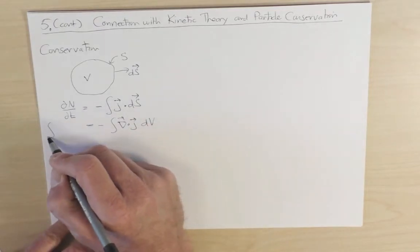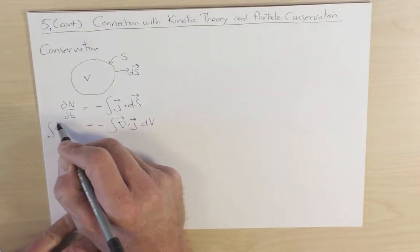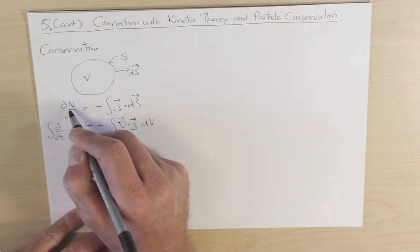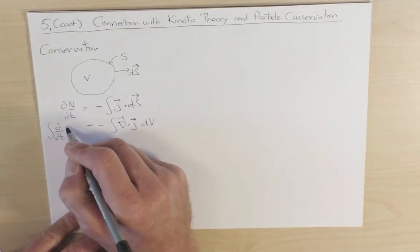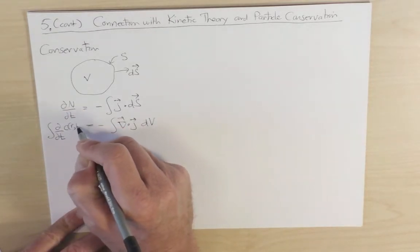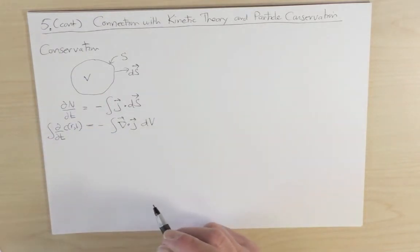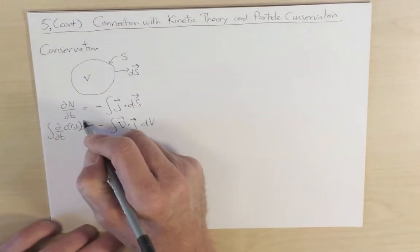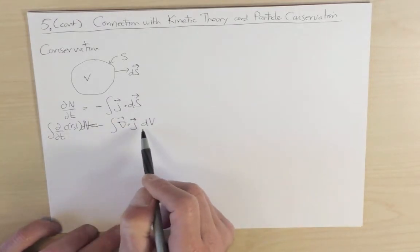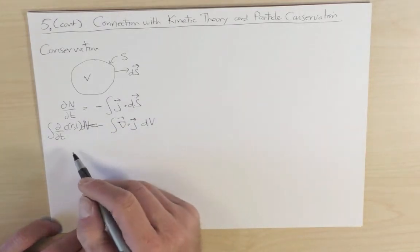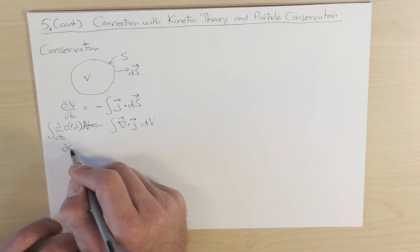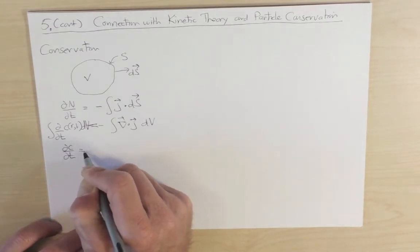Whereas on the right hand side, I can write this as the integral d by dt of the total number of particles is nothing more than the concentration at position r and time t, and then integrated dv. Since our integrands are over the same domain, we then have the statement that dc by dt is equal to minus del dot j.